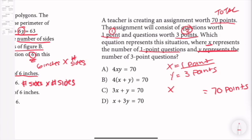Now, if we want to find y, think about it. y is basically three points, and y represents the number of three-point questions. So we're going to add y.